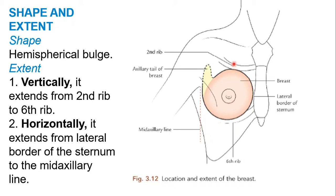In the vertical position, the breast starts from the second rib up to the sixth rib. In the horizontal position, the breast extends from the lateral border of the sternum to the mid-axillary line. The vertical and horizontal extents are important from an exam point of view.